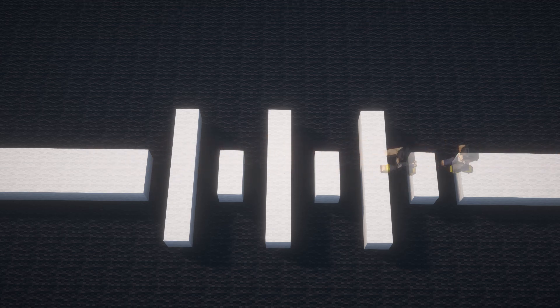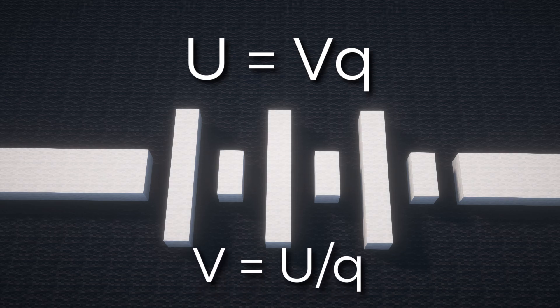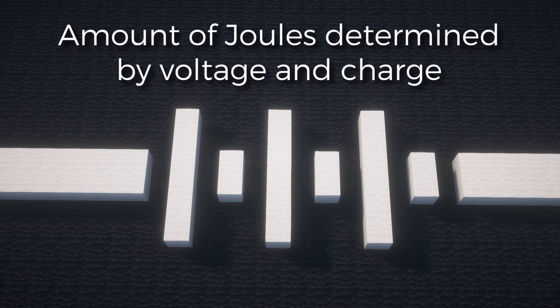The relationship is given by the equation U equals VQ, or V equals U divided by Q. U is the potential energy, V is the voltage, and Q is the charge. So the 9-volt battery creates a potential difference that transfers joules over to each coulomb, and the amount is determined by the charge and volts.